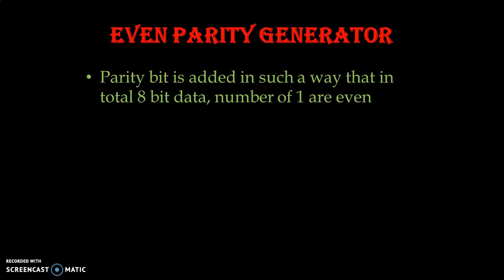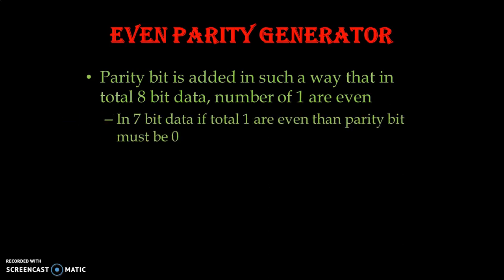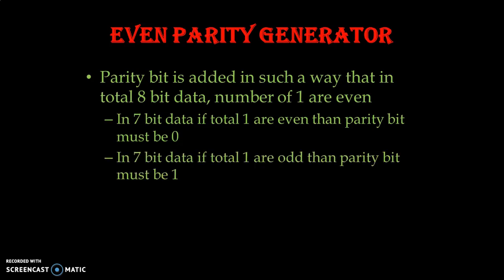In the case of even parity generator, the parity bit is added in such a way that in the total 8-bit data the number of 1s are even. When we decode our information, if we know that it is an odd or even parity generator, we can accordingly detect whether there is an error or not. In 7-bit data, if the total number of 1s are even, then the parity bit must be 0. If the total number of 1s are odd, then we have to make it even, so the parity bit must be 1.